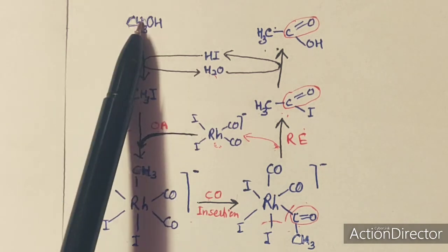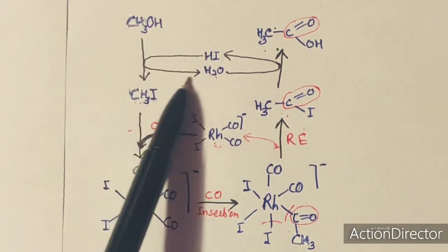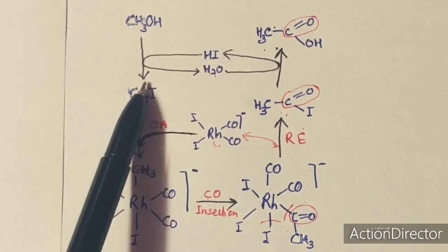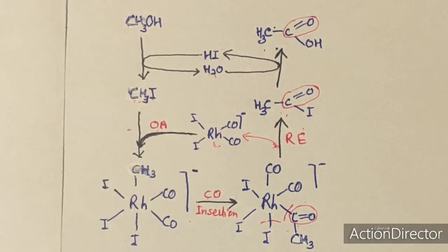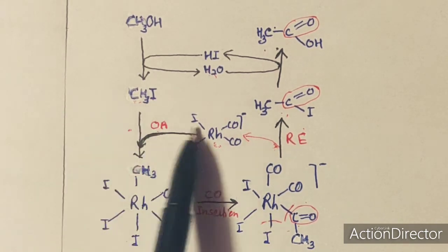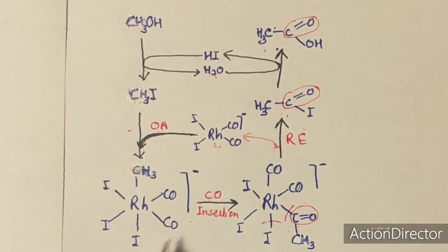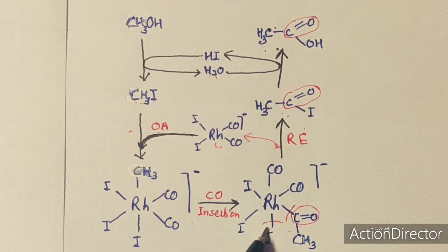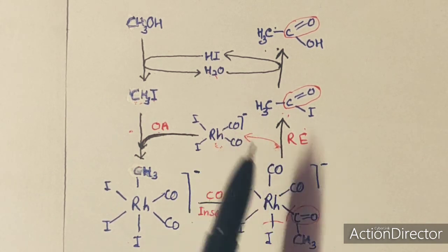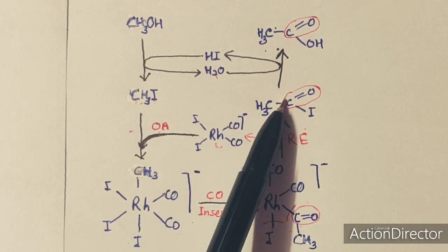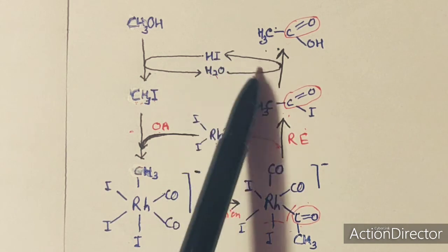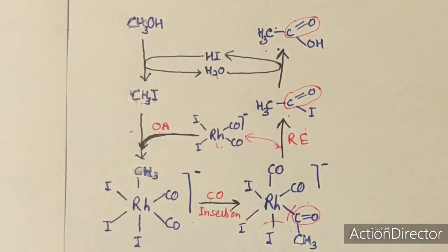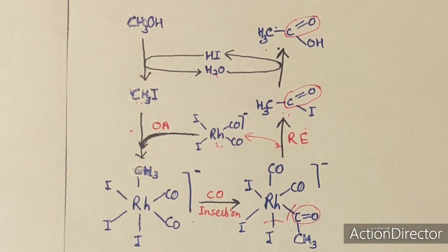Repeating the cycle: the alcohol reacts with HI to produce H2O and CH3I. The CH3I oxidatively adds to the catalyst, then CO inserts to form the acyl complex, then reductive elimination regenerates the catalyst and gives CH3COI. CH3COI reacts with H2O to form acetic acid and regenerate HI. This is a process through which CO can be activated and carboxylic acids can be produced.